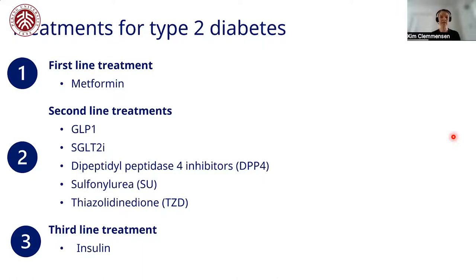We also need to understand how we think about these different treatments for type 2 diabetes. The first-line treatment is metformin, as most patients in Denmark start here. If metformin is not enough to control the individual's diabetes, we have second-line treatments: GLP-1 and SGLT-2, which are the two drugs of interest for this project. We also have DPP-4s, SUs, and thiazolidinediones, and insulin as a third-line treatment.